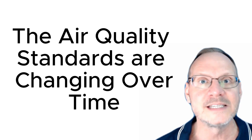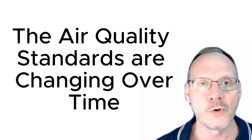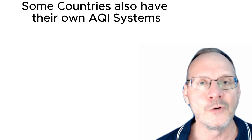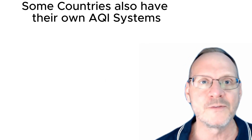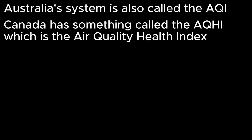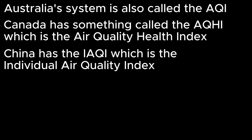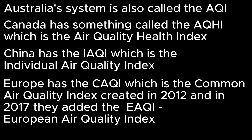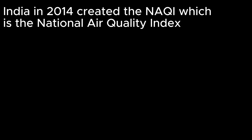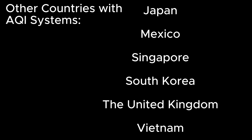The standardizations are becoming more stringent over time as research proves more severe health issues associated with poor air quality, and we can expect that some air quality deemed good today will not be considered good in the future. Some countries have their own AQI ratings: Australia uses the AQI; Canada has the AQHI (Air Quality Health Index); China has the IAQI (Individual Air Quality Index); Europe has the CAQI (Common Air Quality Index, created in 2012) and added the EAQI (European Air Quality Index) in 2017; and India created the NAQI (National Air Quality Index) in 2014. The air quality standardizations in each country are different from each other.